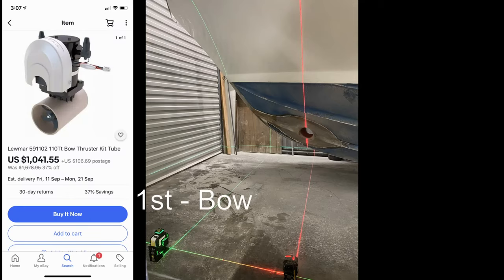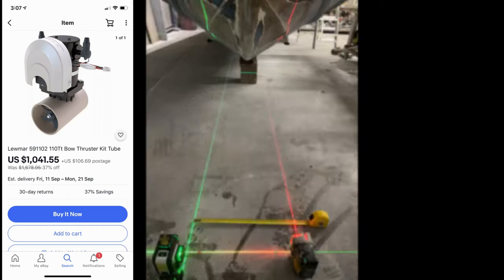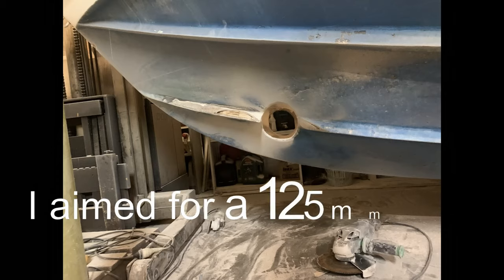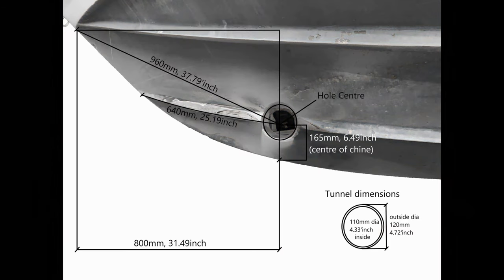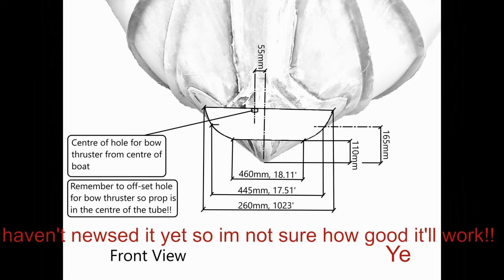I bought a Luma 110TT Gen2 28kg thrust unit. I set some lasers up to give whoever's interested exact measurements for what I did in my 25ft Bertram. Because when I did it I only had manufacturers instructions and some pictures of other 25s that had done it.